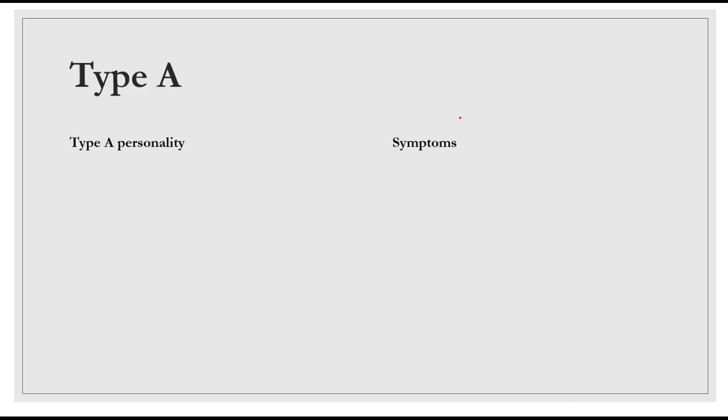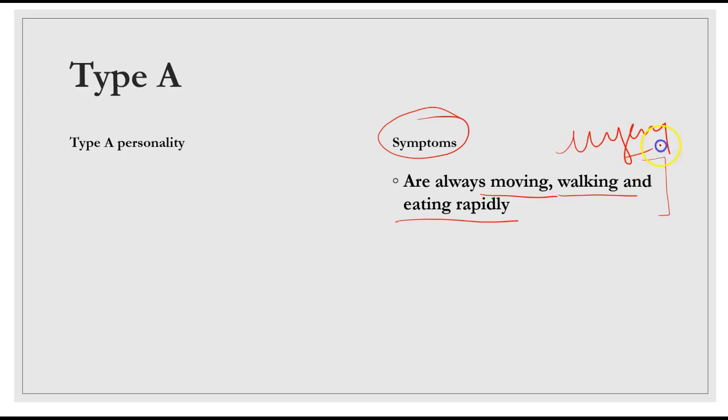So let's talk about Type A. First we'll talk about symptoms and then personality characteristics. The first symptoms are they are always moving, walking and eating rapidly. Basically, they show a lot of urgency. They always do everything in a very hurry.